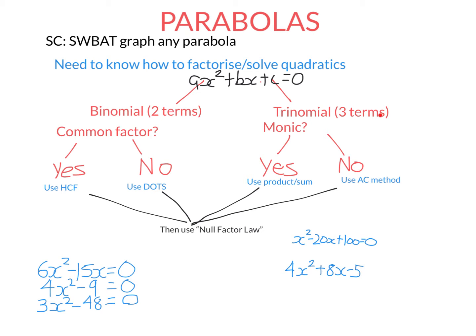If the quadratic has three terms, ask yourself if it's monic — that means the leading coefficient a is one — then you can use the product sum method. But if it's not a monic quadratic, if a is not one, you need to use the AC method in order to factorise.